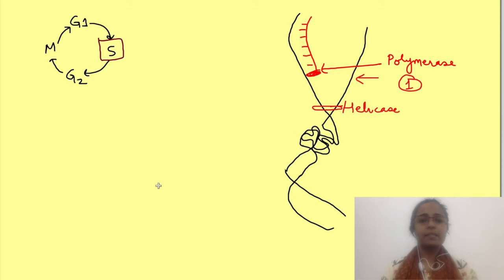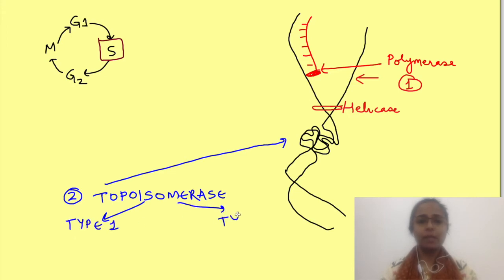For DNA synthesis to take place continuously, these super coils need to be removed. This is done by the enzyme DNA topoisomerase. Now this DNA topoisomerase are of two types, type 1 and type 2.